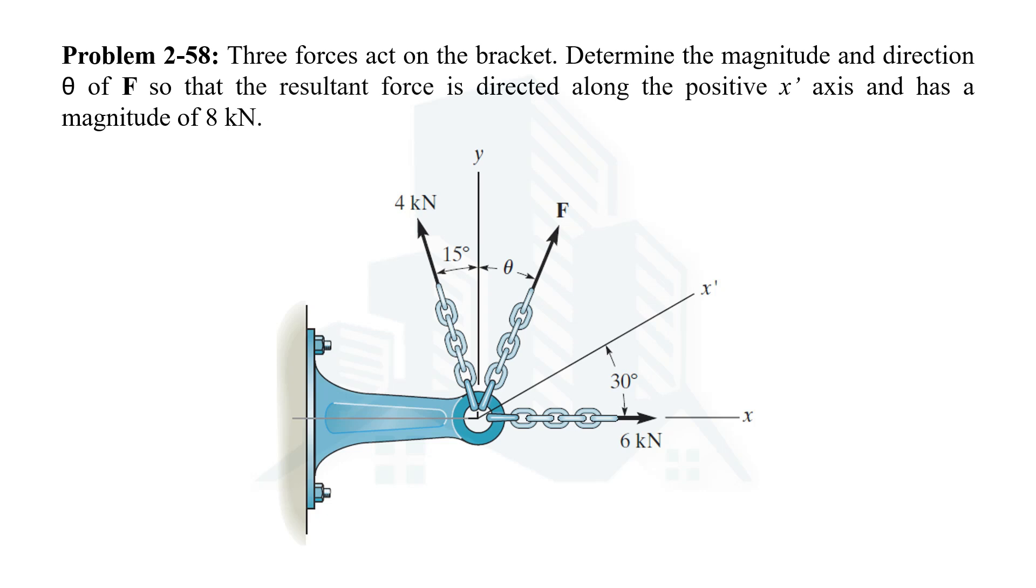In this problem there are three forces acting on the bracket as can be seen in this figure. We are being asked to determine the magnitude and direction of F force, meaning the magnitude of F and the theta value. We are also given two other forces: 6 newton along the positive x-axis and 4 kilonewton force making an angle of 15 degrees with the positive y-axis.